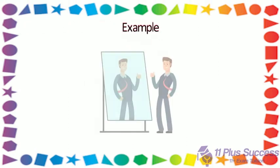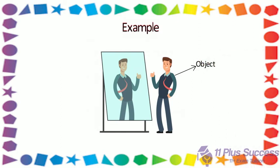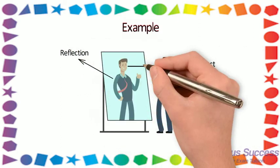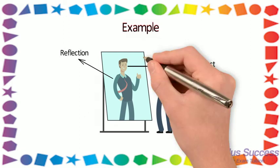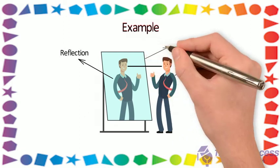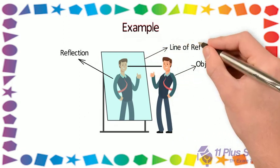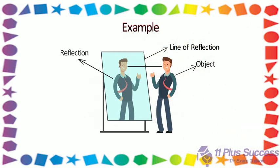Example: If you look in the mirror, you see your own reflection. You, the object, and your reflection will be at the same distance and angle from the mirror. The mirror acts as a line of reflection through which your image is copied.